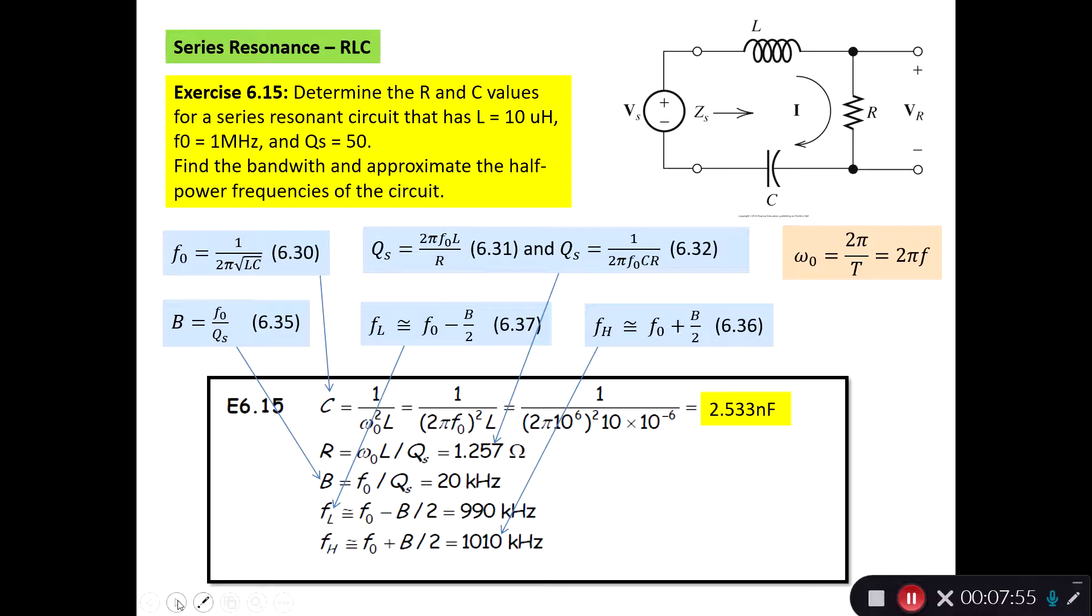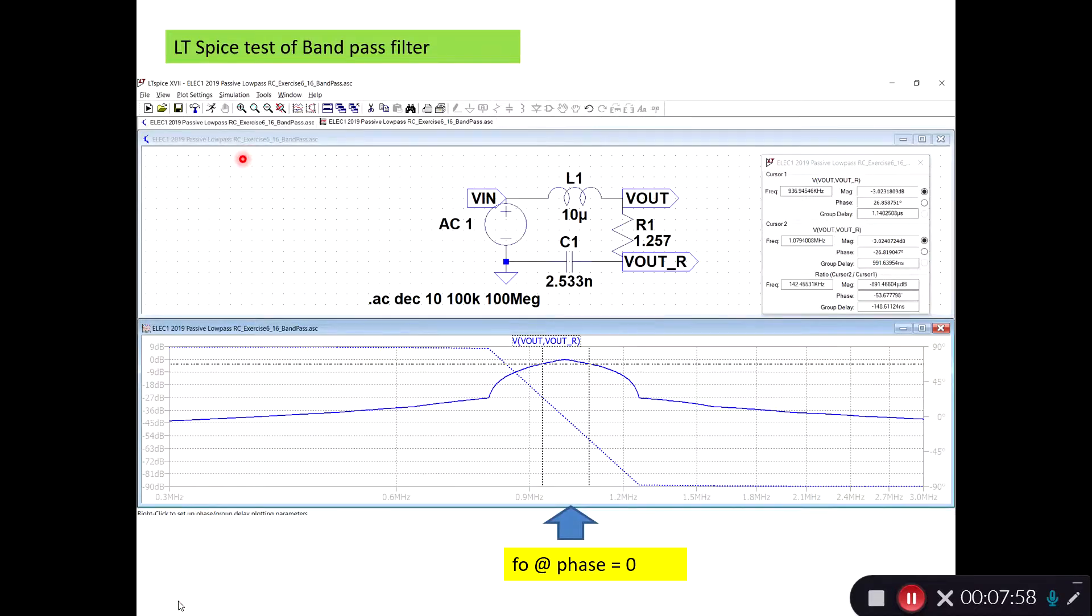But we have to test. Again, we build it in LTSpice, set it up and do a simulation with these parts here, a sweep. And then we can see in our Bode plot here, there is something with that peak and then go low again. And this is the bandpass filter.